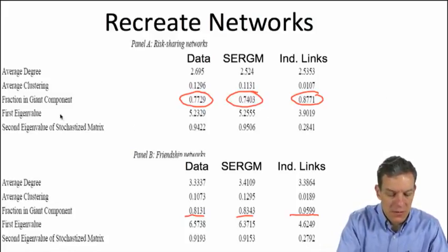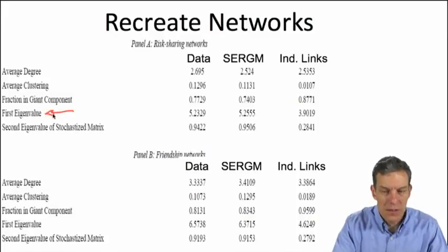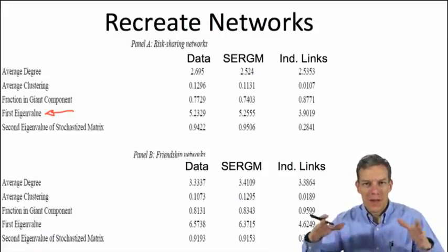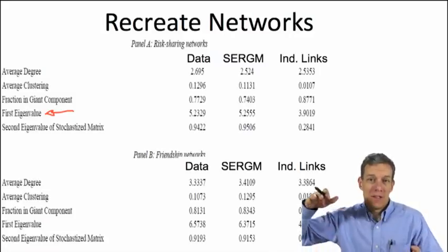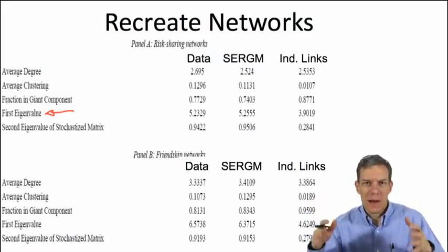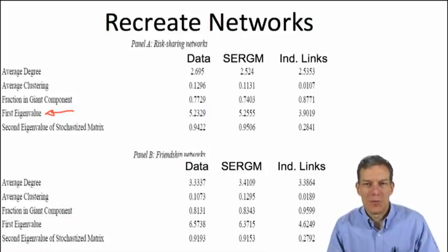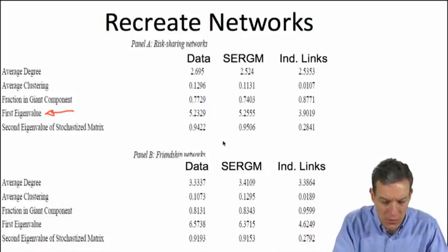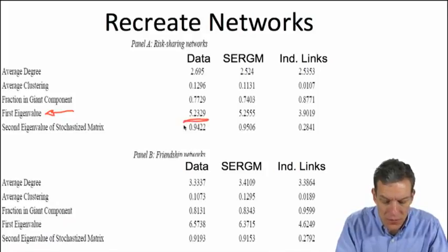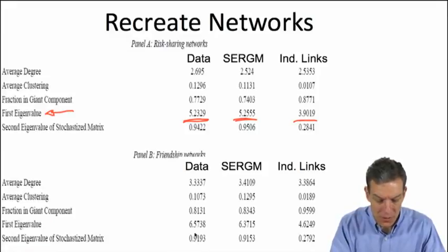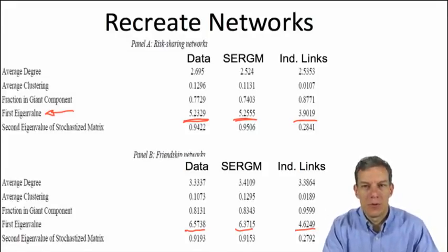Looking at the first eigenvalue of the adjacency matrix — a measure of the expansion properties of the network — the actual data show 5.2, and the ERGM recreates this at 5.2 as well. The independent links model gives only 3.9. For friendship networks: actual 6.5, ERGM 6.3, but independent links gives 4.6. The independent links model does not match well on the first eigenvalue, and these were not things that were directly fitted.